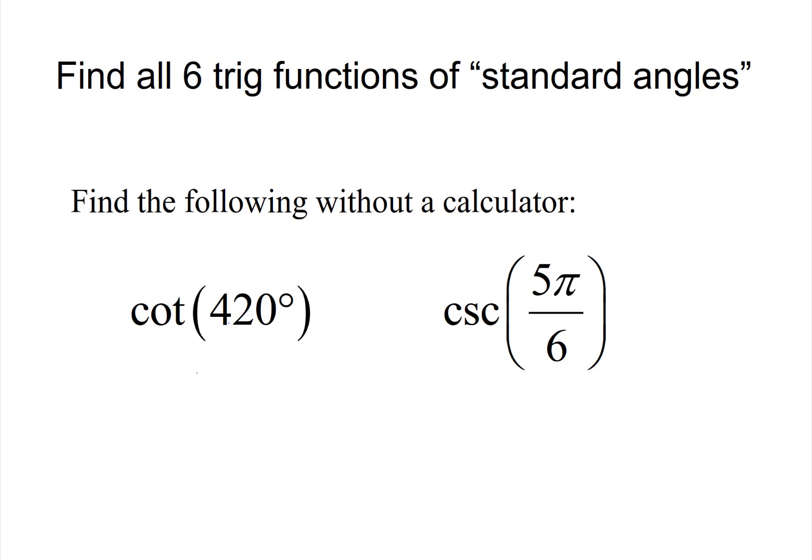For the cotangent of 420 degrees, I'm going to find a coterminal angle to that by subtracting 360 degrees. So I'm going to figure out what the cotangent of 60 degrees is, and that'll be the same as the cotangent of 420 degrees.